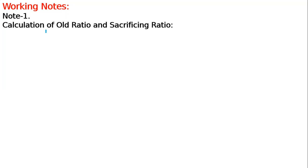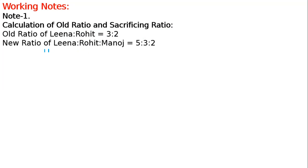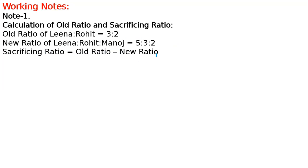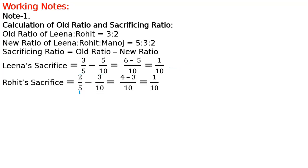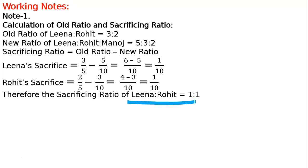In Note 1 — Old Ratio and Sacrificing Ratio: Old ratio of Lena to Rohit is 3:2. New ratio of Lena to Rohit to Manoj is 5:3:2. Sacrificing ratio = Old ratio minus New ratio. Lena's sacrifice: 3/5 minus 5/10 = 1/10. Rohit's sacrifice: 2/5 minus 3/10 = 1/10. Therefore, sacrificing ratio of Lena to Rohit is 1:1.